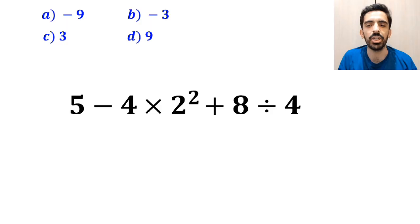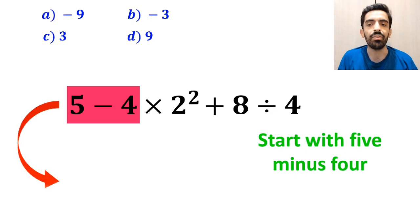Let's dive in and break it down step by step together. Many people when solving this question start with 5 minus 4 and write this expression as 1 multiplied by 2 squared plus 8 divided by 4.